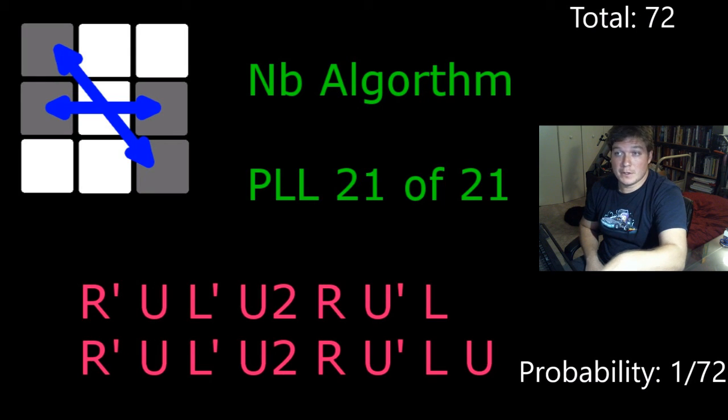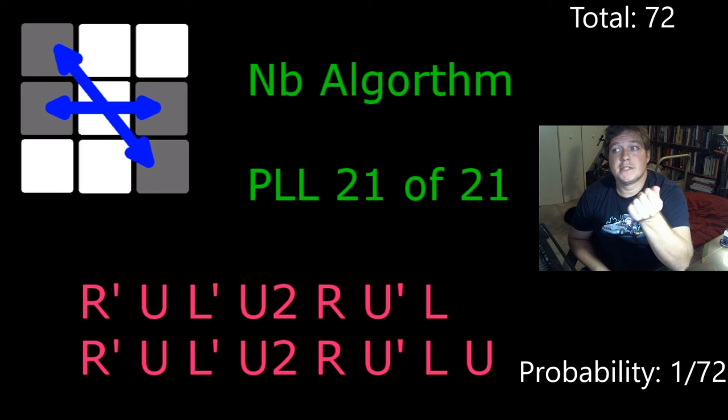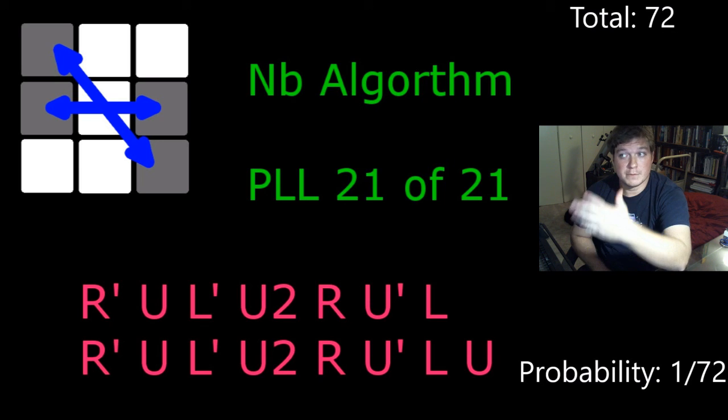So there's your 72 total cases for PLL. They can be solved with 21 different algorithms because the first case is trivial and it's down by four for most of these.